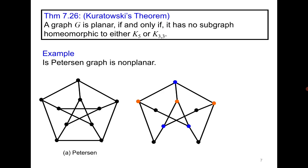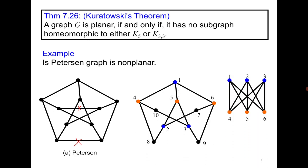If you consider the subgraph obtained by deleting these two edges, you can see there are three blue vertices, three orange vertices, and the remaining vertices are degree-2 vertices. These degree-2 vertices simply show the subdivision of edges, and therefore we get a subdivision of the modified graph. This means the Petersen graph has a subgraph homeomorphic to K3,3, and these four vertices show the subdivision of the four edges of K3,3. Therefore the Petersen graph is non-planar.